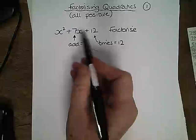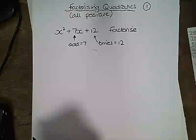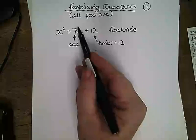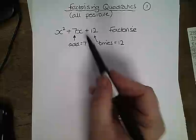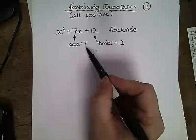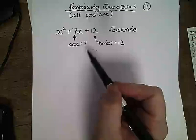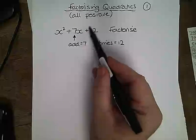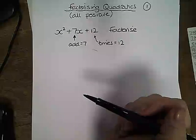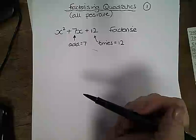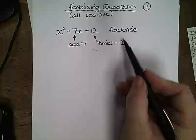In order to do this we need to look for two numbers which add to give 7 and times to give 12. Because all of the signs in this expression are positive we don't need to worry about manipulating the signs. It is always the number in front of the x which is the sum, so they need to add to give that, and it is always the number on its own which is the product. And this is where we start.